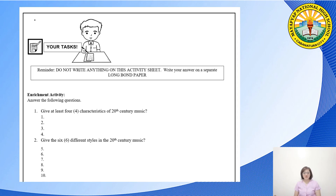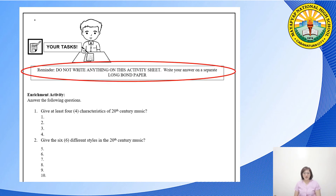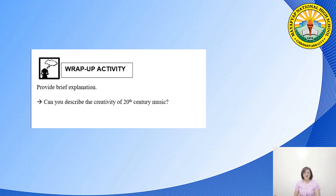At this point, get your Quarter 1, Week 1 activity sheet. Reminder: do not write anything on the activity sheet — write your answers on a separate long bond paper. For the enrichment activity, for numbers one to four, give at least four featured characteristics of 20th century music. For numbers six to ten, give the six different styles in 20th century music. For the wrap-up activity, provide a brief explanation to answer the question.